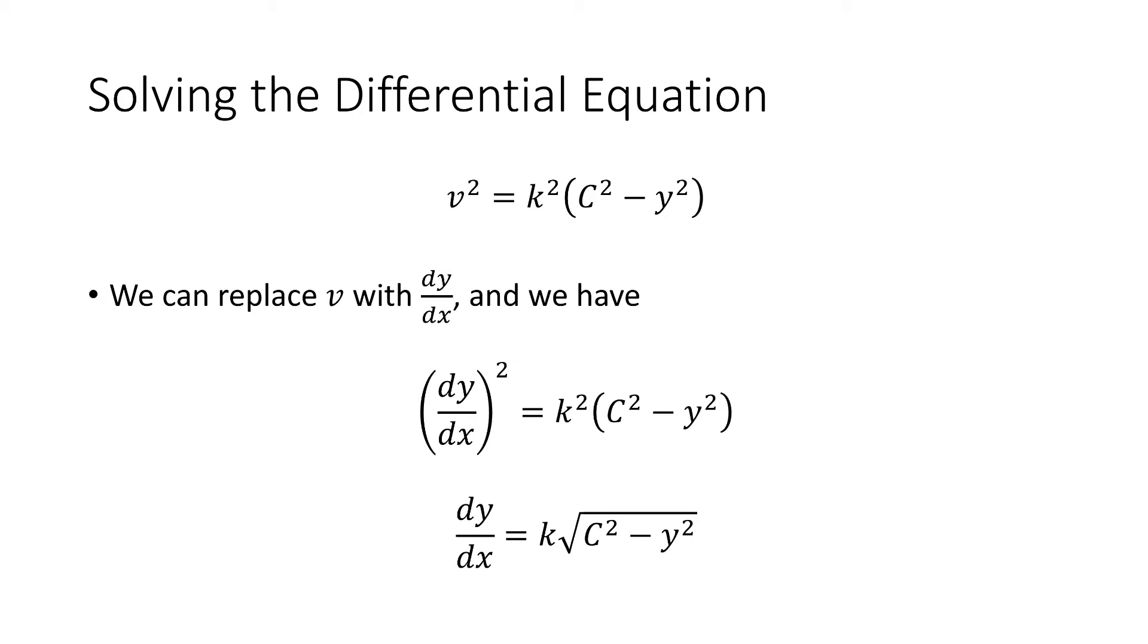The reason we use c squared as the constant is because any constant squared is still a constant. So this allows us to see when we're trying to solve this next separable differential equation, it allows us to use a pretty easy form to figure out what the solution is.